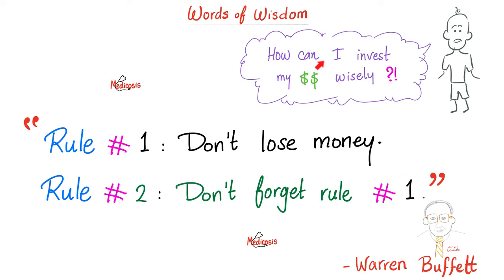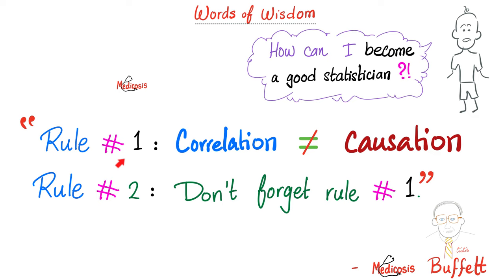Warren Buffett said: rule number one in investing — don't lose money. Rule number two: don't forget rule number one. By the same token, the first rule of statistics is that correlation is not the same as causation. And the second rule of statistics: please refer to rule number one. If you want to see more videos like this in the future, drop your favorite math symbol in the comments.